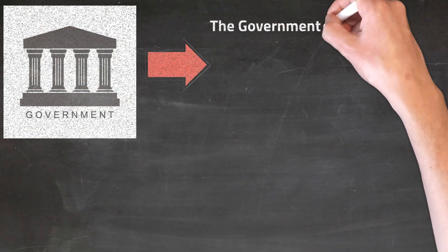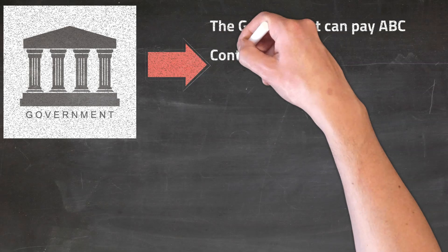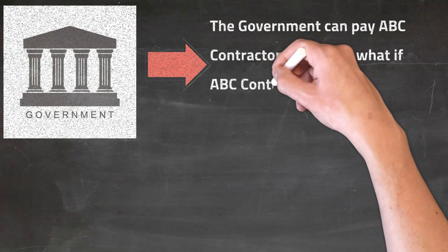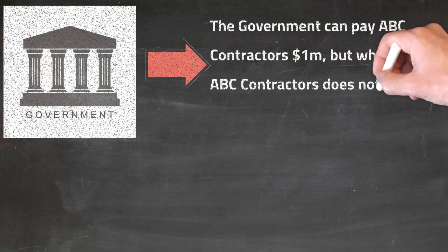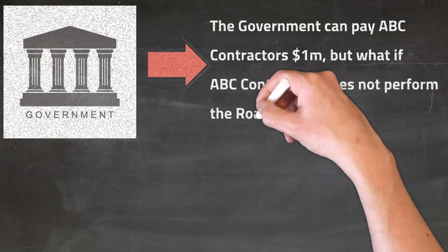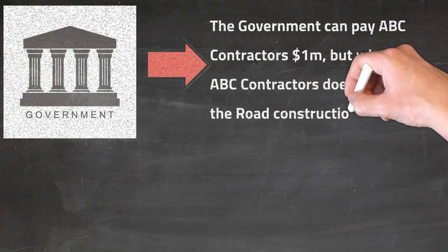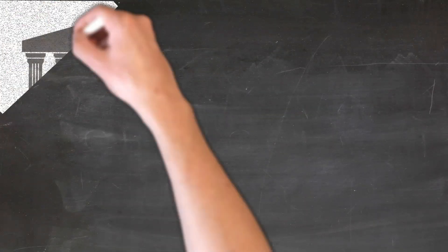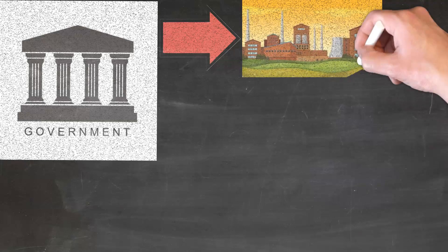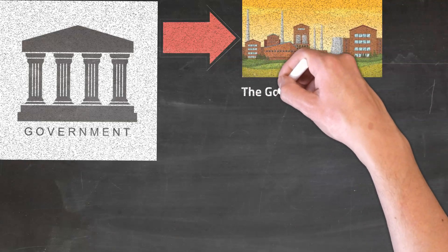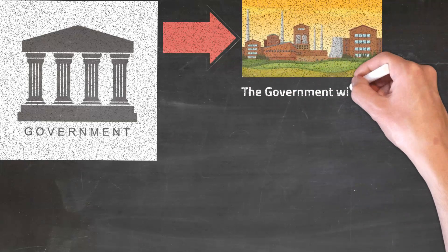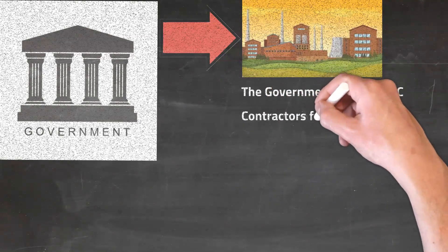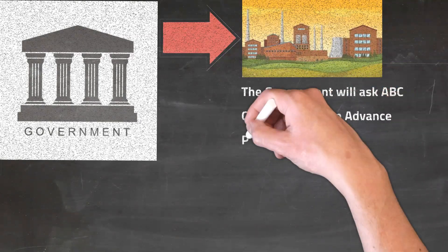The government can pay ABC Contractors $1M, but what if ABC Contractors does not perform the road construction? To mitigate this risk, the government will ask ABC Contractors for an advance payment guarantee.